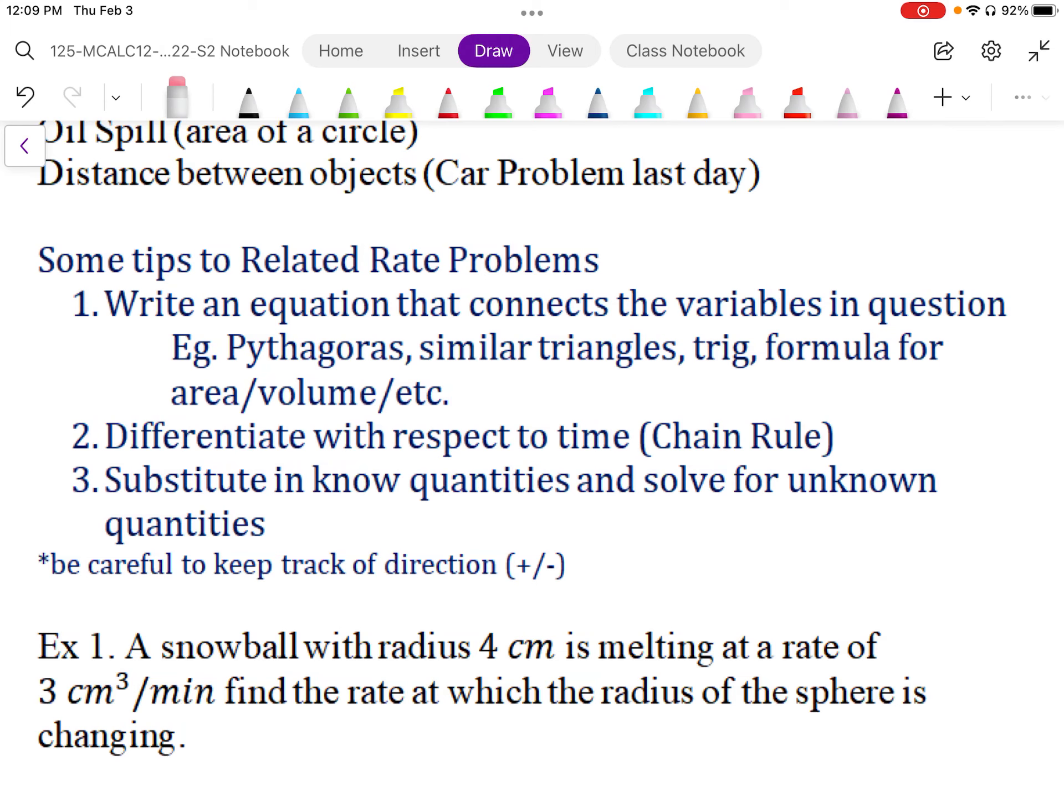The properties we might use are Pythagoras, similar triangles, some trig, formula for area or volume, etc. Once we've done that, we want to differentiate with respect to time, because usually the rate is with respect to time. So we want to use chain rule.